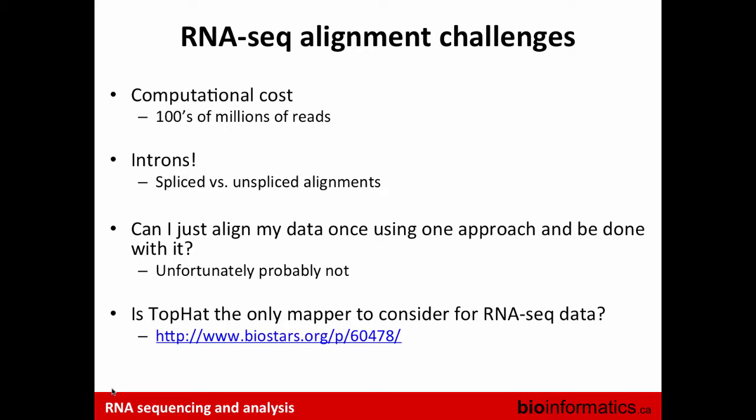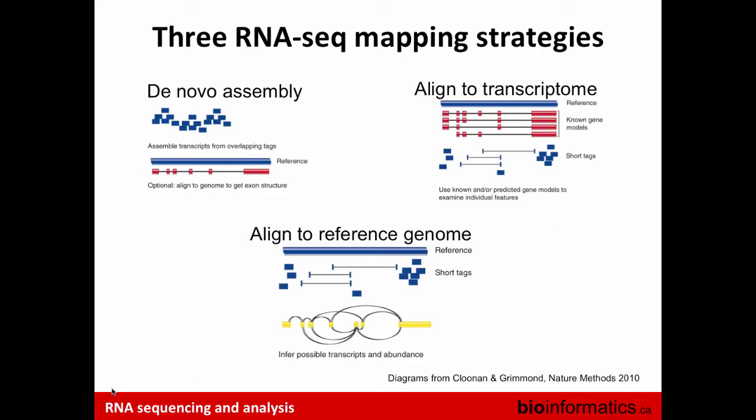RNA-seq data is very rich — it contains information not only about expression but also about splice variants, SNPs, and fusions. Each one of these different data types has its own set of pipelines and ways to process that data.